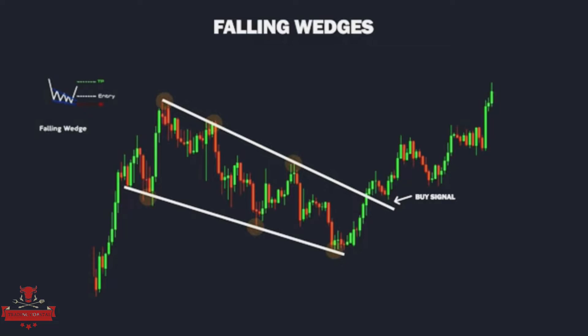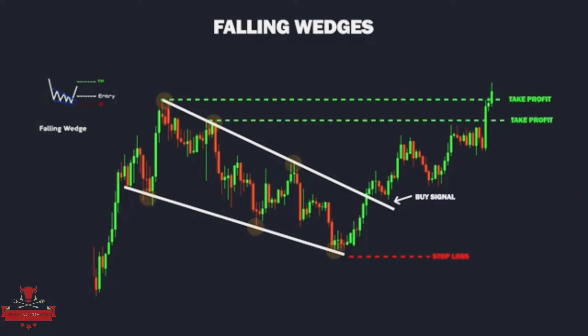Then the pair should retest the resistance previously broken, which is now acting as support, as confirmation. The entry point is set at the confirmation level, and stop losses are usually placed at the low previous to the break. The wedge chart pattern offers several potential take profit target levels depending on the strength of the break — you can select any preliminary resistance tested when the pattern was forming.